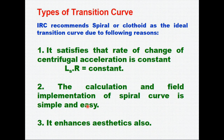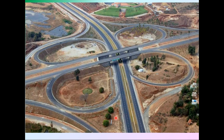IRC suggests the spiral curve as the ideal transition curve for the following reasons: it satisfies a constant rate of change of centrifugal acceleration, that is, Ls times R is constant throughout the length; the calculation and field implementation of a spiral curve is simple and easy; and it enhances aesthetics. Combining a spiral with or without an intermediate circular arc allows greater design flexibility, particularly when space is limited and large directional changes are involved — for example, at a cloverleaf interchange where the directional change is 270 degrees.